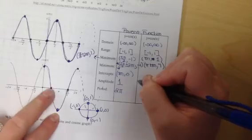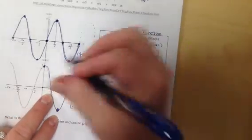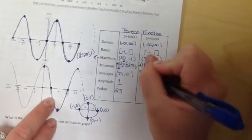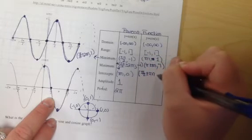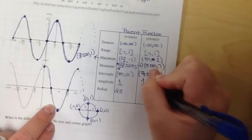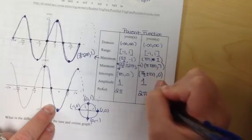My intercepts are going to be at π/2 ± πn, comma, zero. My amplitude's still one and my period is still 2π.